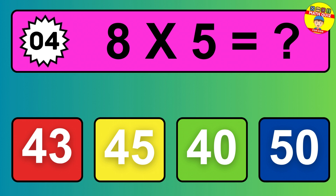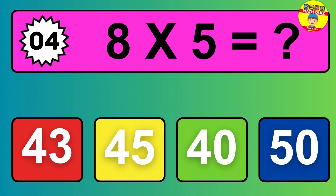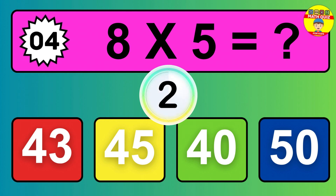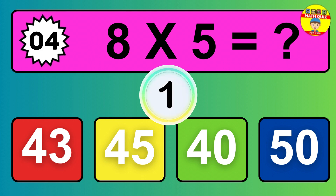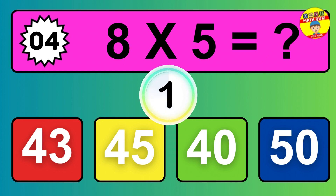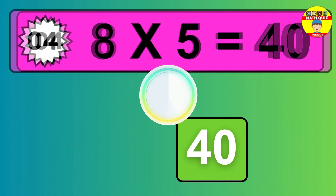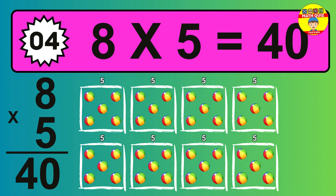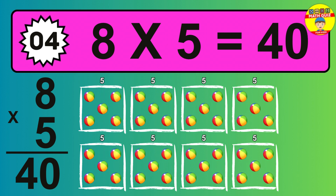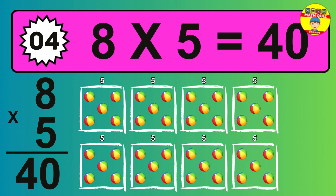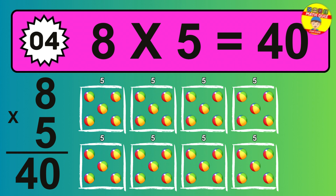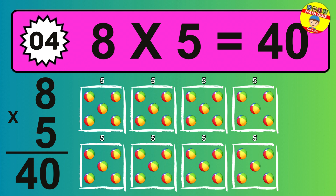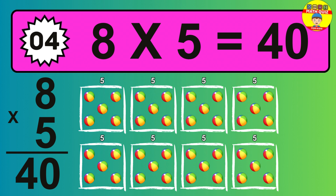Question 4. 8 times 5 equals what? The answer is 8 times 5 is 40. To calculate, we have 8 groups with 5 balls each one. So how many balls do we have? 40 balls.